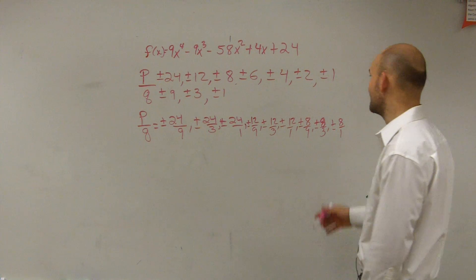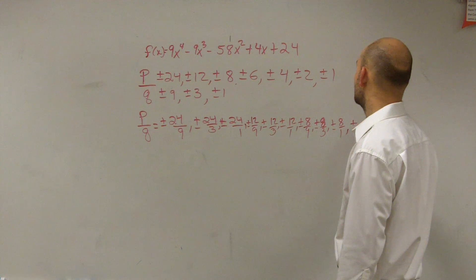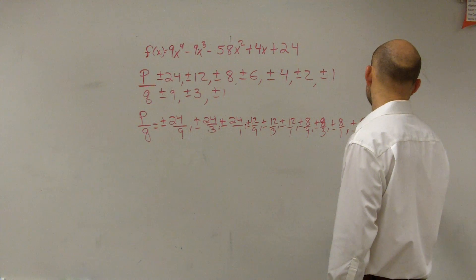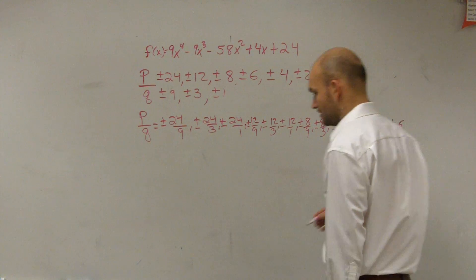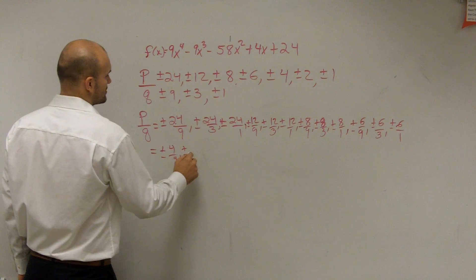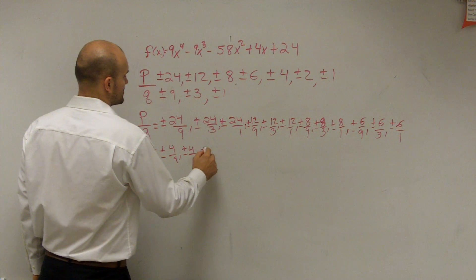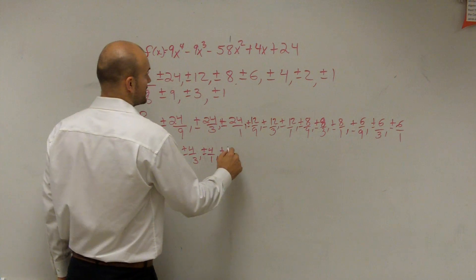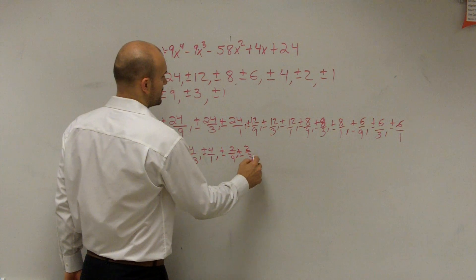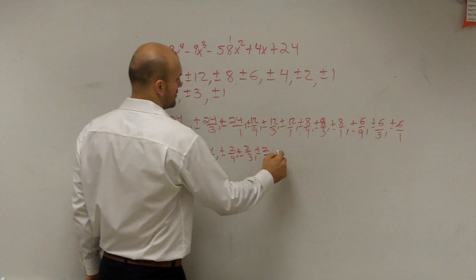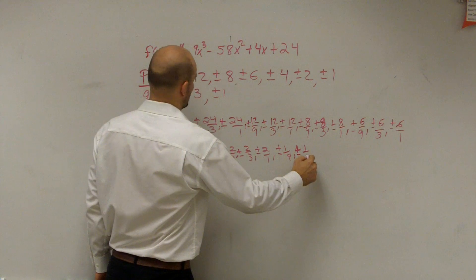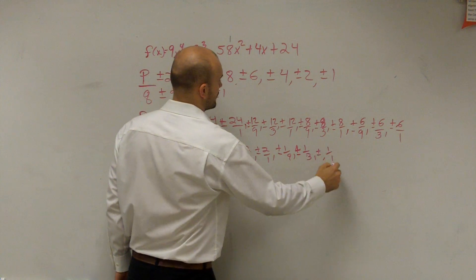This is a lot of them, but we'll go through them. We have plus or minus 6 over 9, plus or minus 6 over 3, plus or minus 6 over 1. I'm running out of space, so I'm going to continue over here: plus or minus 4 over 9, plus or minus 4 over 3, plus or minus 4 over 1, plus or minus 2 over 9, plus or minus 2 over 3, plus or minus 2 over 1, plus or minus 1 over 9, plus or minus 1 over 3, plus or minus 1 over 1.